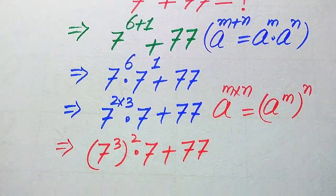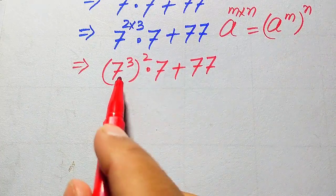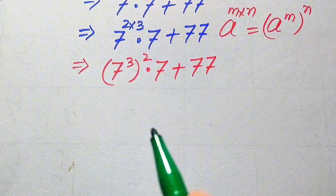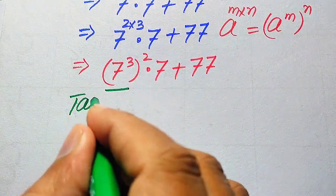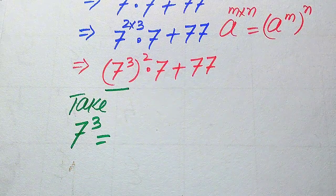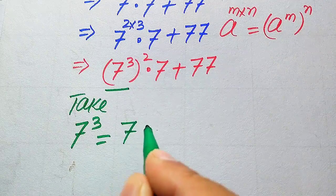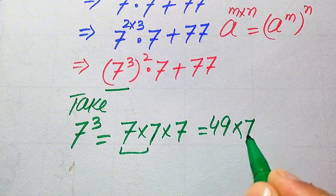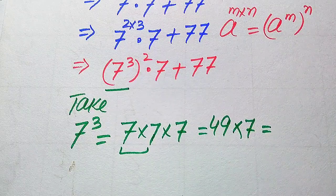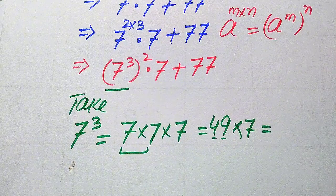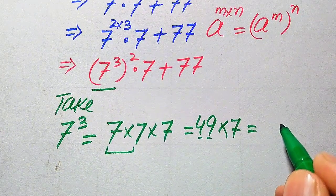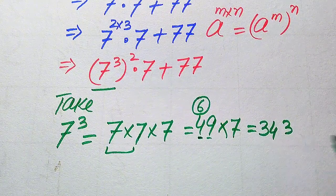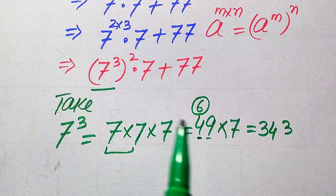Our next target is to find 7 cubed whole square. We first separate this term and find 7 cubed only, then take the square. 7 cubed means we multiply 7 by itself 3 times. 7 times 7 becomes 49, multiplied by 7. To multiply without a calculator, we multiply 7 separately on each digit: 7 times 9 is 63, write 3 carry 6; 7 times 4 is 28, plus 6 is 34. So 7 cubed equals 343.